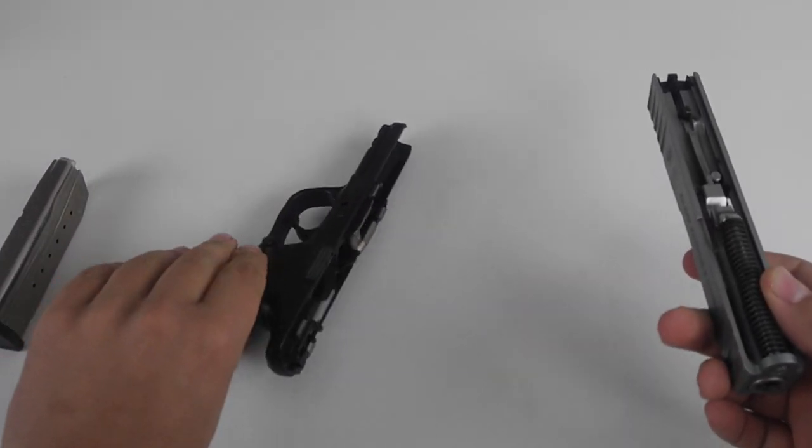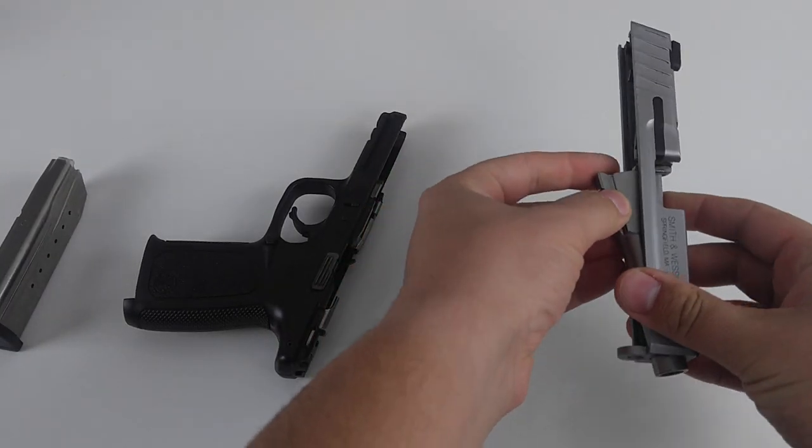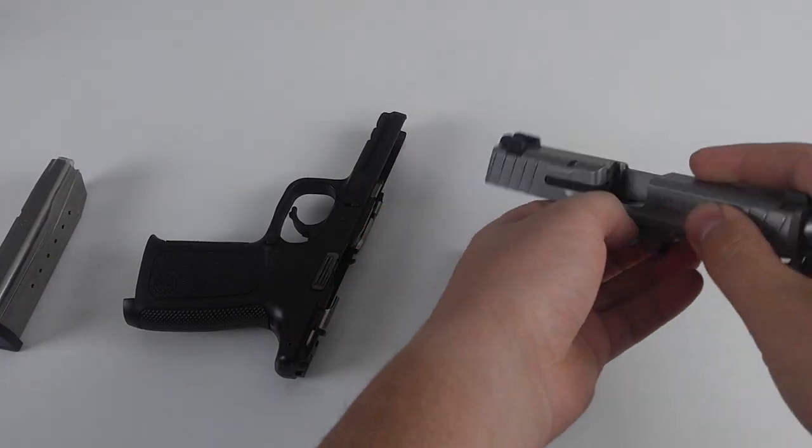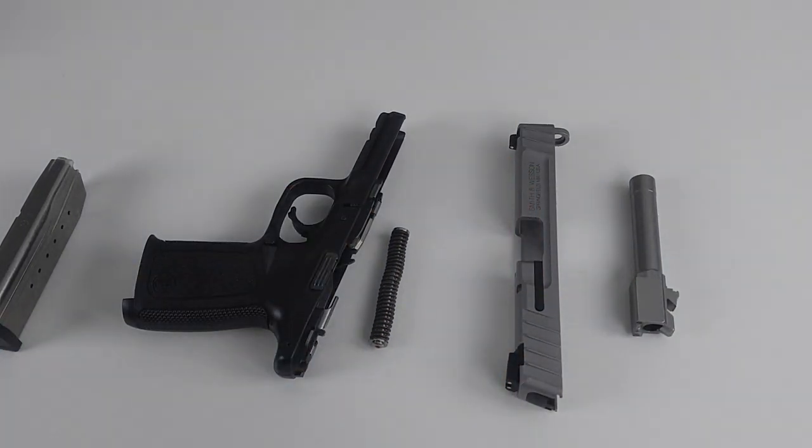So we will set the bottom here, take off the spring and remove the barrel, and now we can begin the oiling process.